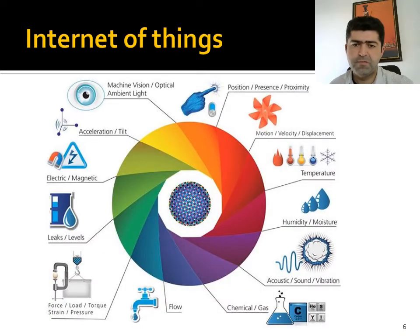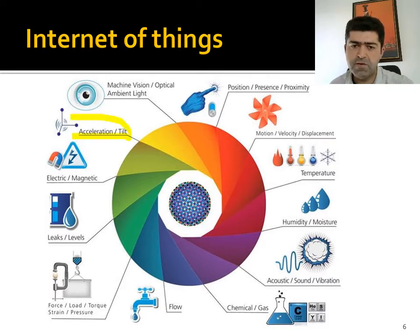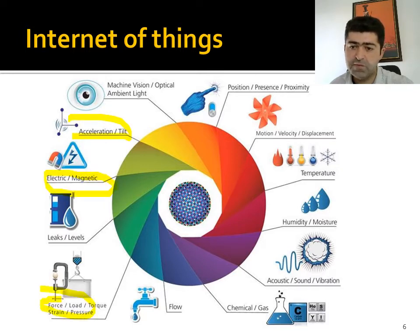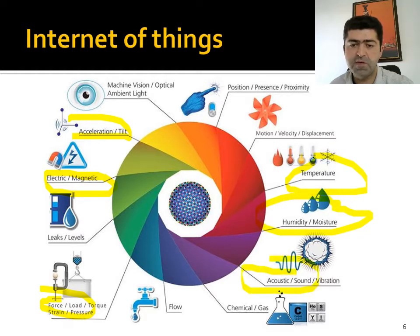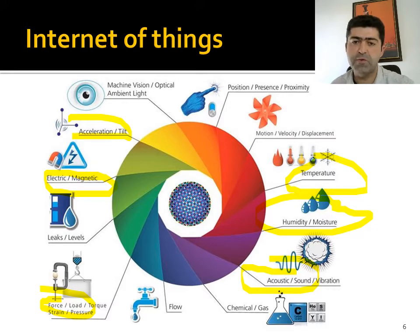Several examples of sensors can be given here: acceleration sensors, magnetic sensors, force sensors, temperature, humidity, moisture sensors, and acoustic sensors can all be used in IoT applications.